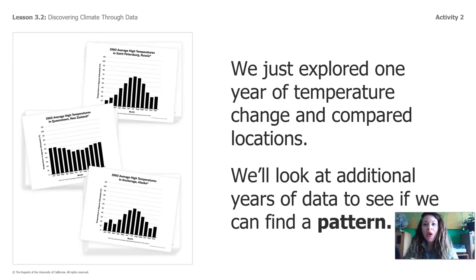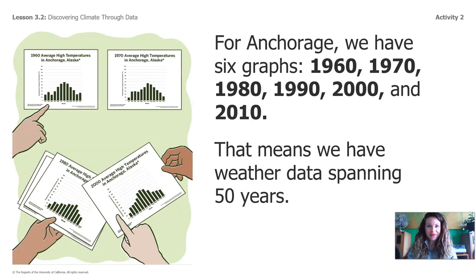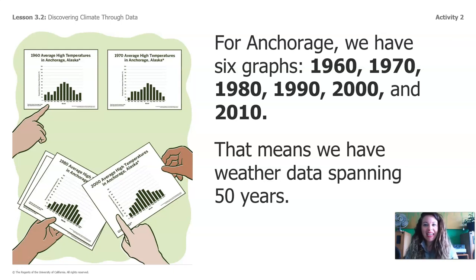We just explored one year of temperature change and compared locations. Now we're going to look at additional years of data to see if we can find a pattern. Do you remember Anchorage, Alaska, that had the big mountains covered in snow? For Anchorage, we have six graphs: 1960, 1970, 1980, 1990, 2000, and 2010. That means we have weather data for Anchorage that spans 50 years — that is a lot of weather data. We're really going to be able to find a pattern.